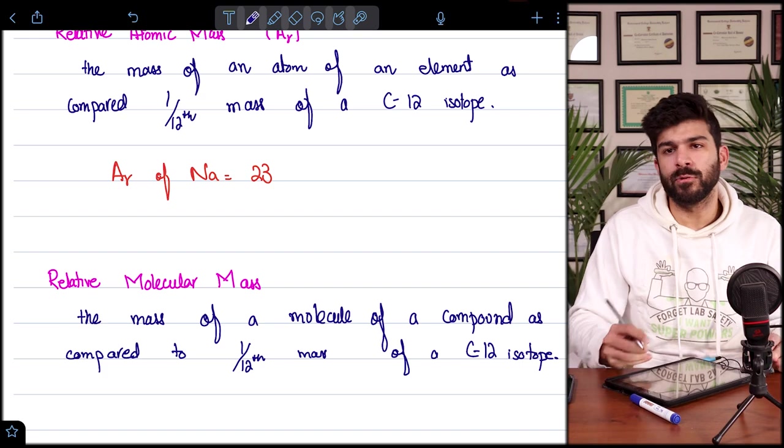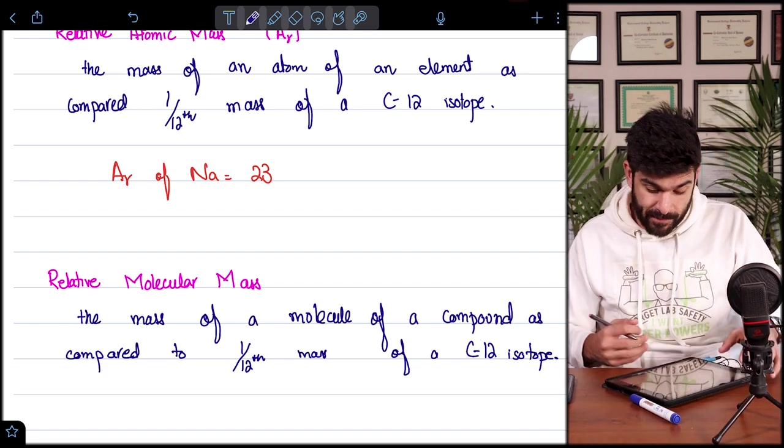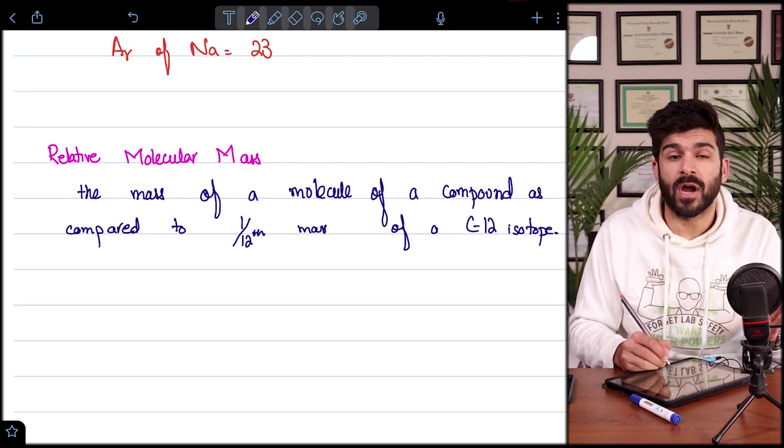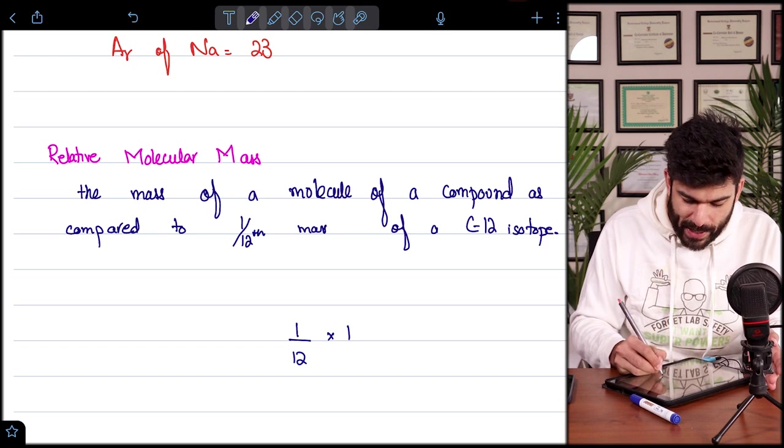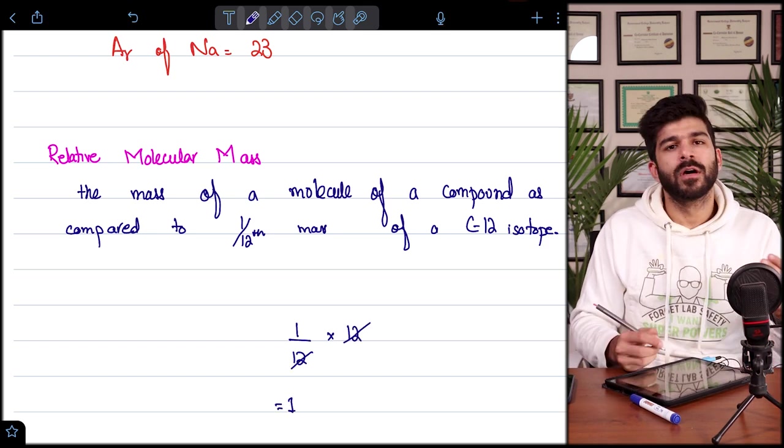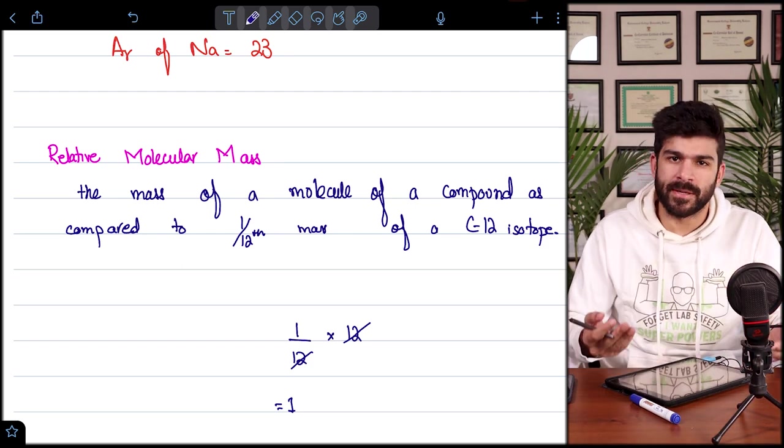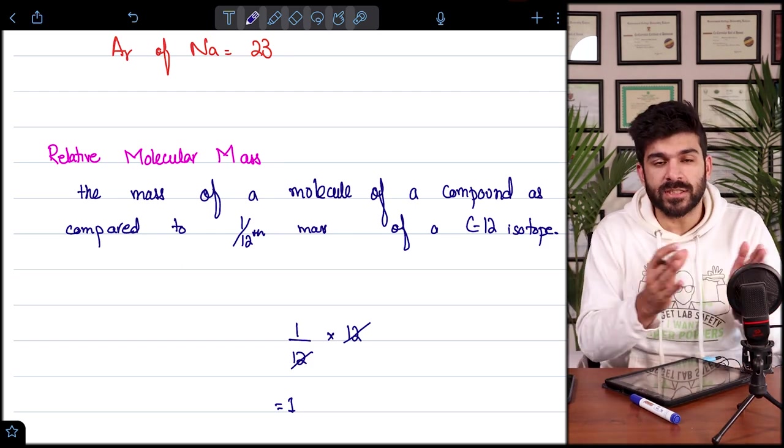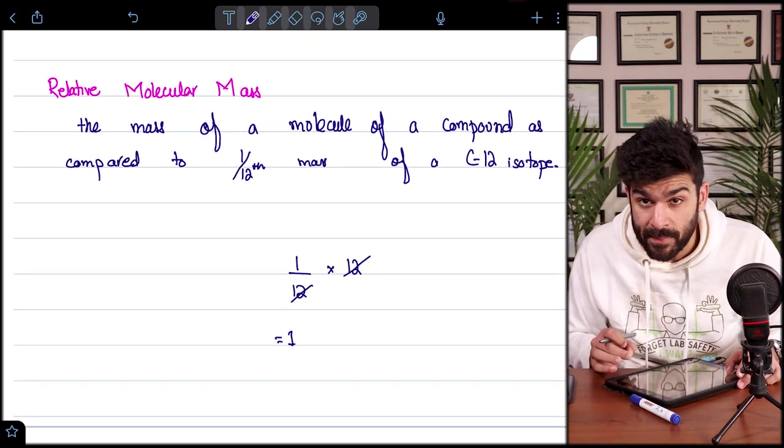Now there's a funny thing about these definitions. Even I myself find them funny. A one twelfth mass of carbon 12 isotope. You divide 12 by 12, that would be one. So you just divide any atomic mass by one and you get the same answer. So this is just the definition, it's very important as compared to one twelfth mass of carbon 12 isotope.